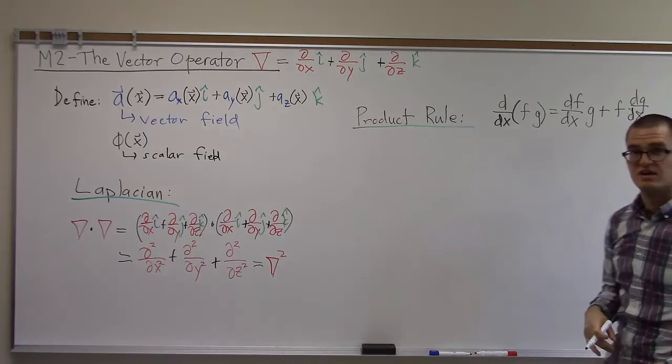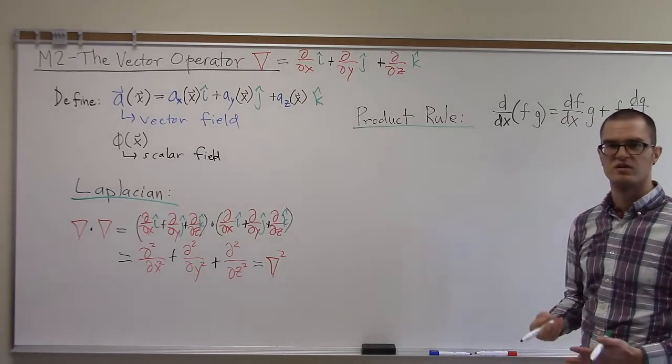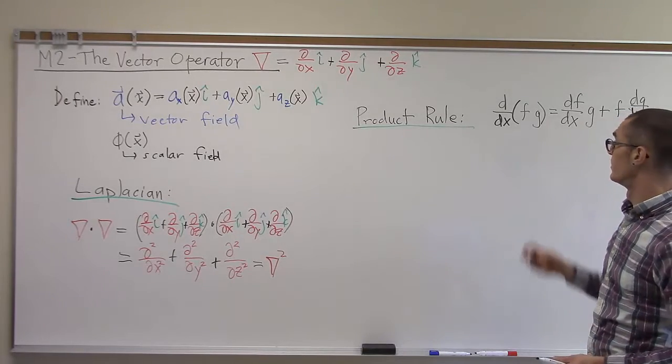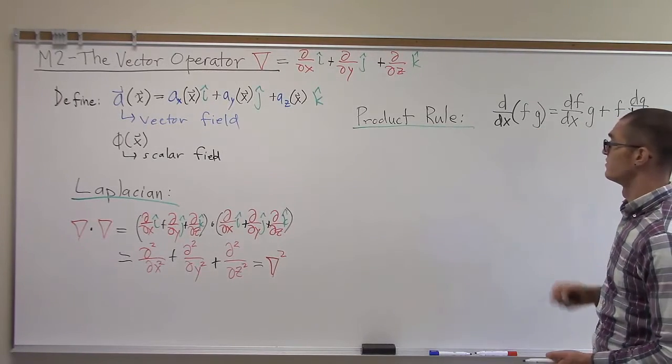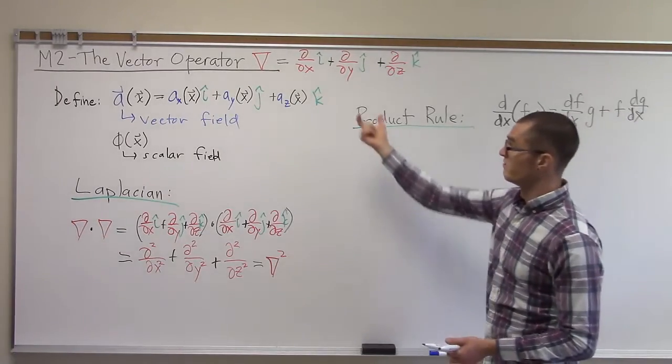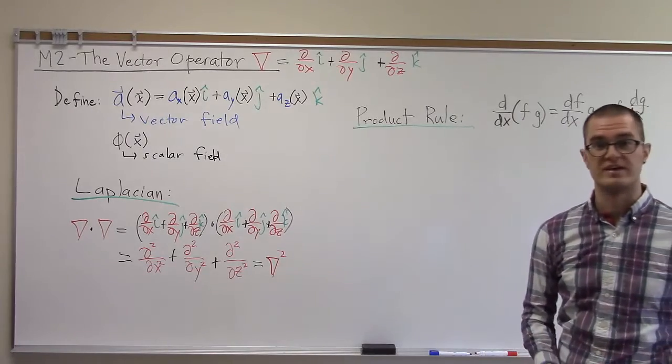Supposing that f and g are only functions of x. So that's product rule just for functions of single variables, where these are scalar functions of single variables. Let's see how that translates into vector derivatives of scalar or vector fields.